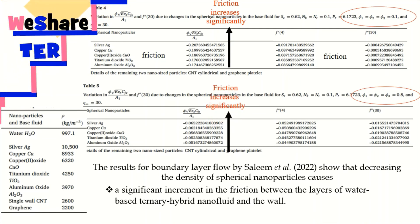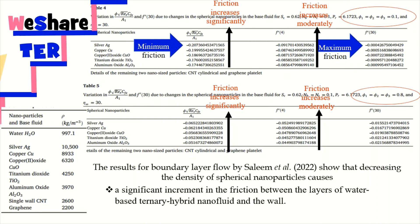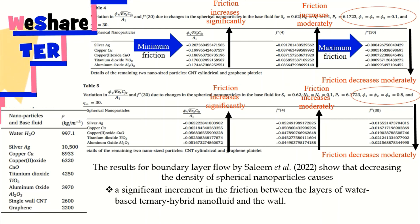In Table 5, where the colloidal mixture of all five ternary hybrid nanofluids is made up of large amounts of spherical, cylindrical, and platelet nanoparticles, a significant increment in the friction between the layers of water-based ternary hybrid nanofluid and the wall now emerges. A few distances away from the wall, there is a need to understand the variation in friction beneath the transport phenomenon of five ternary hybrid nanofluids. At this point in the domain, moderate increment in the friction manifests. Far away from the wall — at the free stream — the results of the simulation show that the friction at the edge of each transport phenomenon of five ternary hybrid nanofluids decreases.